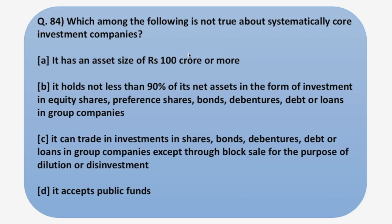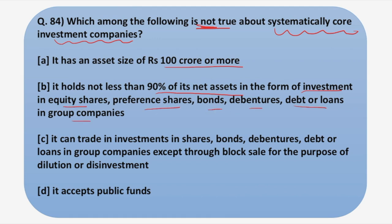The next question is really interesting. Which among the following is NOT true about systematically important core investment companies? Four statements are given: (1) It has an asset size of 100 crores or more. (2) It holds not less than 90% of its net assets in the form of investment in equity shares, preference shares, bonds, debentures, debt, or loans in group companies. (3) It can trade in investments in shares, bonds, debentures, debt, or loans in group companies except through block sale for dilution or disinvestment. (4) It accepts public funds.